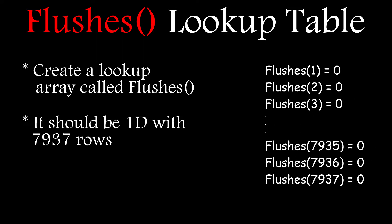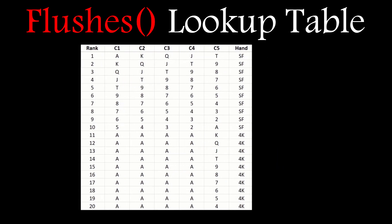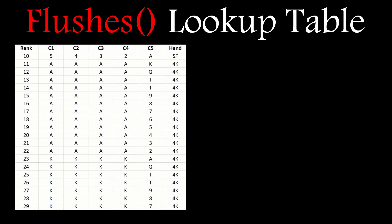So let's build our flush lookup table. We'll need an array with 7,937 rows and I'll populate it with zeros to start. Next, let's grab that table and scan down through it looking for all the flushes and straight flushes. When we find one, we'll need to extract the array index from the cards that make up the hand.